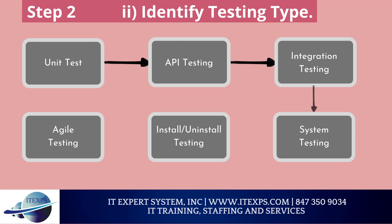Second, identify testing types. A testing type is a standard test procedure that gives an expected test outcome. Each testing type is formulated to identify a specific type of product bug, but all testing types are aimed at achieving one common goal: early detection of all defects before releasing the product to the customer.